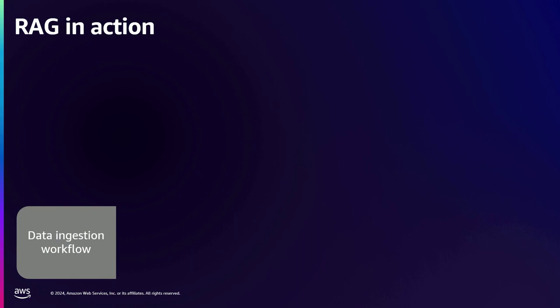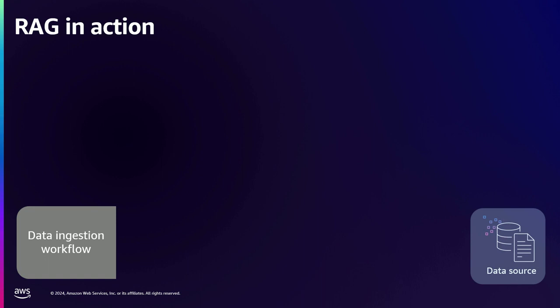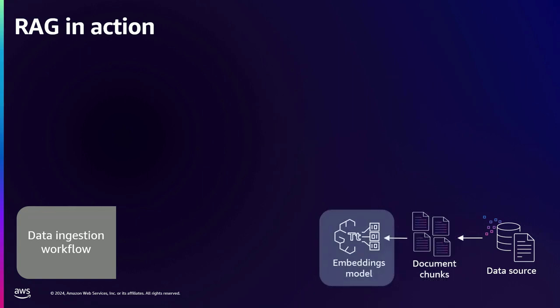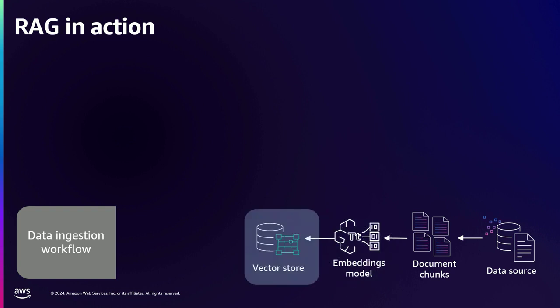RAG has two main parts. The first part is the data ingestion workflow, where we prepare our data for our application. We have our data sources — as a company, you must have a lot of enterprise data scattered in different data sources. We use that data, convert it into chunks, and these chunks are sent to an embedding model, which converts them into embeddings and stores them in a vector database or vector store.